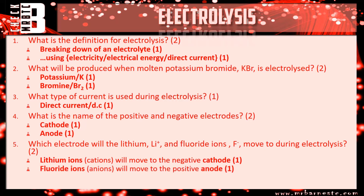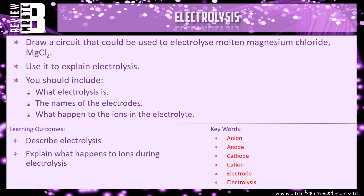That's the end of the questions. There is a review question for you: draw a circuit that could be used to electrolyse molten magnesium chloride, MgCl₂, and use that to explain electrolysis. Include what electrolysis is, the names of the electrodes, and what happens when you turn the power pack on — where do the magnesium ions and chlorine ions go?